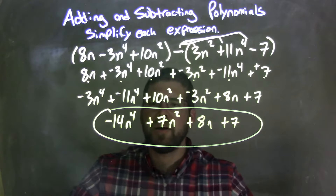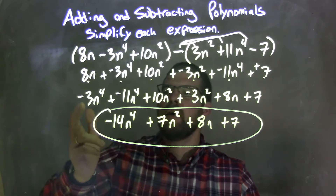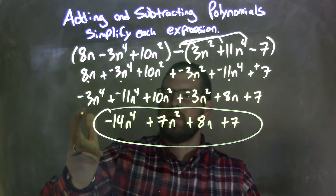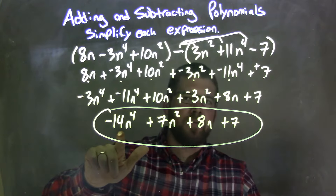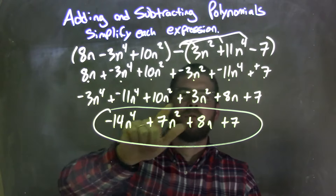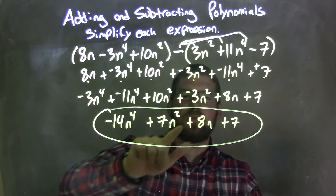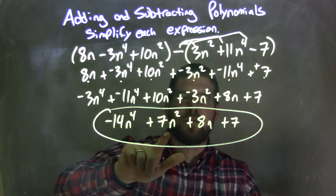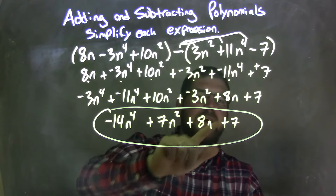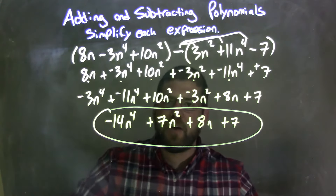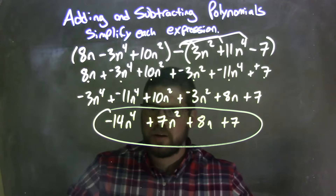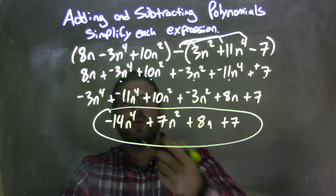Then from there I simplify. Negative 3n to the 4th plus a negative 11n to the 4th gives me negative 14n to the 4th. 10n squared plus a negative 3n squared is 7n squared. 8n came down, 7 was right there. And now we have our final answer, nice and neat: negative 14n to the 4th plus 7n squared plus 8n plus 7.